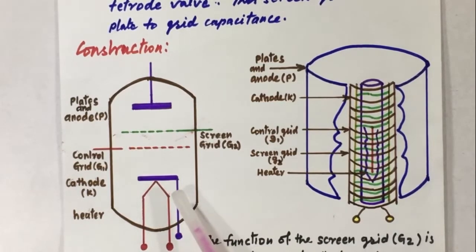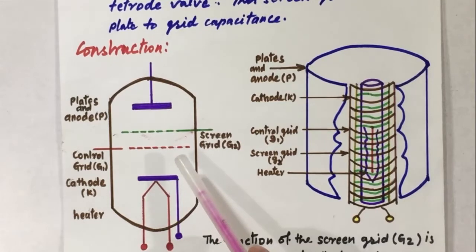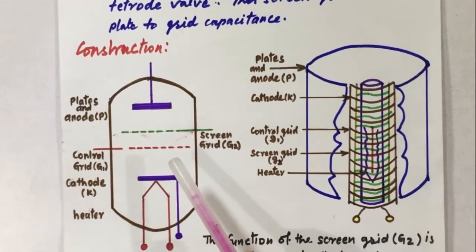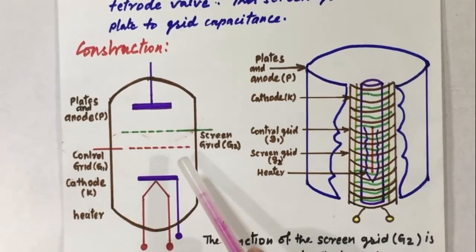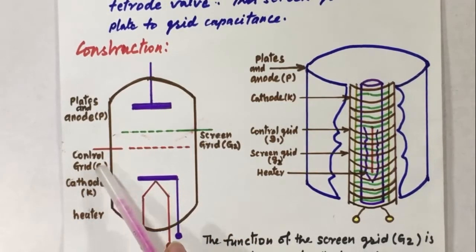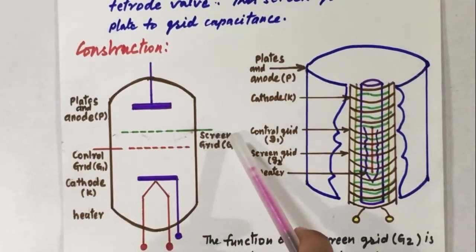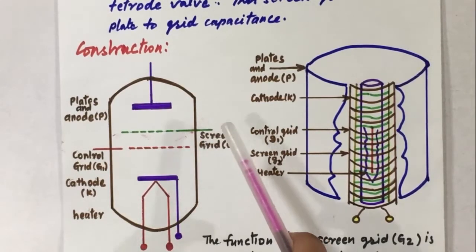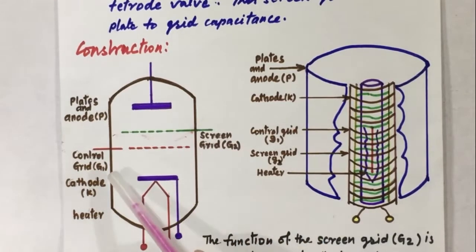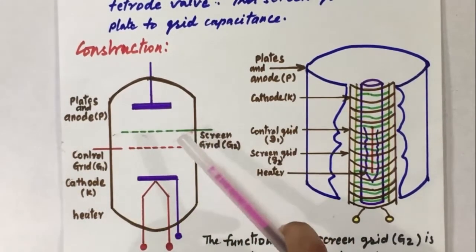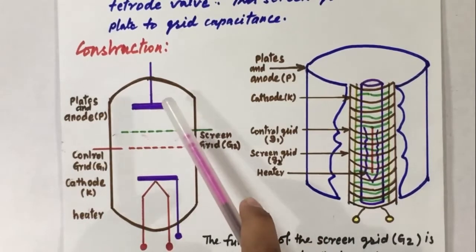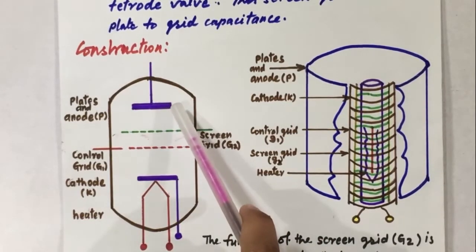As the cathode is heated, it starts emitting electrons. The electrons pass through the control grid G1. The number of electrons emitted and passing through the control grid G1 is controlled by applying a negative potential through the control grid G1. The electrons pass through the control grid and reach the screen grid G2, if and only if the screen grid G2 is comparatively at a positive potential compared to the control grid G1. Finally, as the electrons reach the anode, current starts flowing in our external circuit.